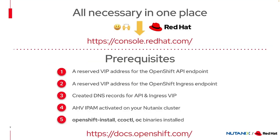Before deploying your first OpenShift cluster on the Nutanix stack, there are some prerequisites. First, you need to reserve two virtual IPs: one for the OpenShift API endpoint and one for the OpenShift ingress endpoint. You must also create the corresponding DNS records for these VIPs. Importantly, you need to enable the IPAM feature on the Nutanix subnet where you plan to deploy your OpenShift cluster. Finally, you need the different tools to deploy your cluster.